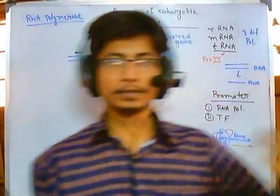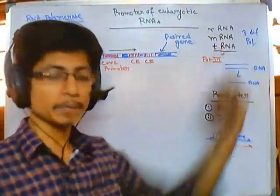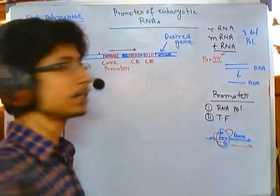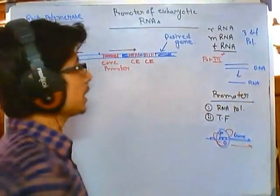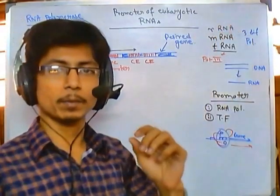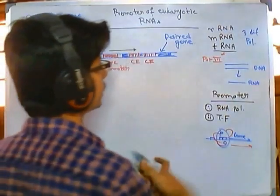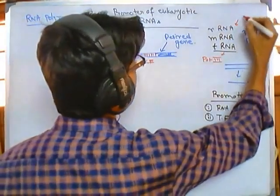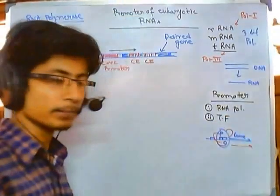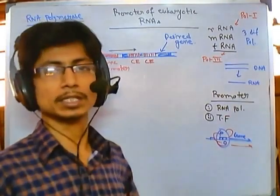Welcome again friends. In the previous video we talked about the promoter sequence for tRNA. Now in this video we will be talking about the promoter sequence for transcribing rRNA. For the transcription of rRNA we require RNA polymerase 1.